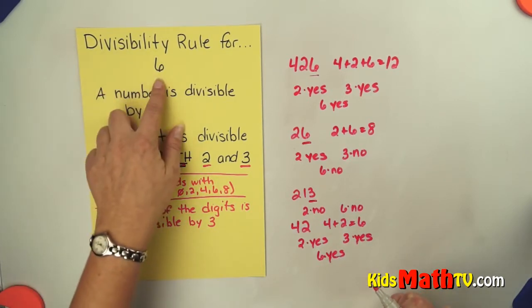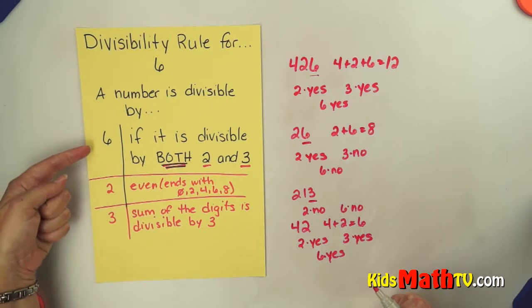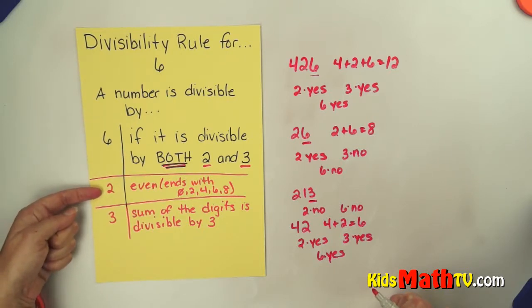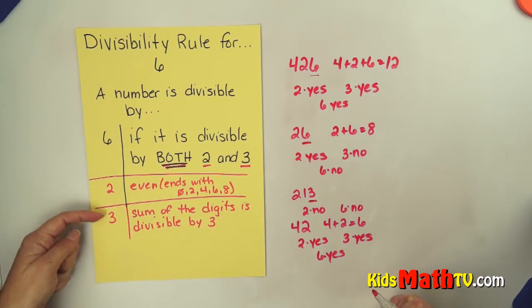So to find out if a number is divisible by 6, you have to find out if it's divisible by both 2 and 3. And if it is, then it is divisible by 6. And that ends the lesson of the divisibility rule for 6.